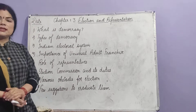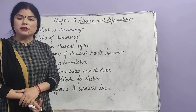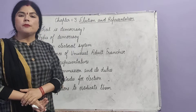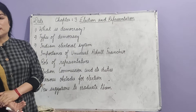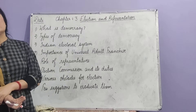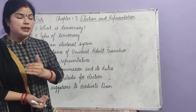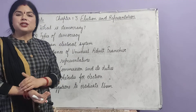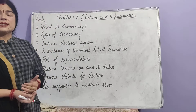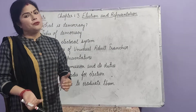In our previous classes, we discussed the different forms of government many times — monarchy form of government, dictatorship form of government, and finally democracy form of government. When we compare all these forms, we conclude that democracy is the best form of government. I shall explain this with the help of Abraham Lincoln's definition: Democracy means a form of government of the people, by the people, for the people.